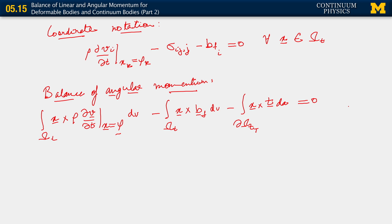This is what we have. Now, we observe that everything works out just fine except for that surface integral. And as we did before, in the surface integral we are going to replace the traction with Cauchy's theorem, which says that the traction t is sigma n. And then we're going to work with that term.